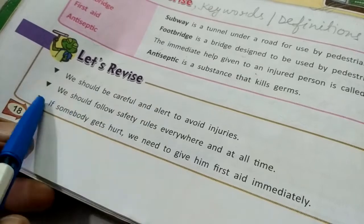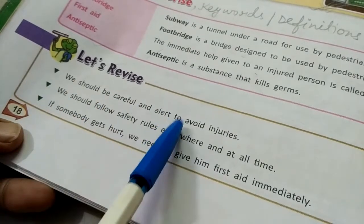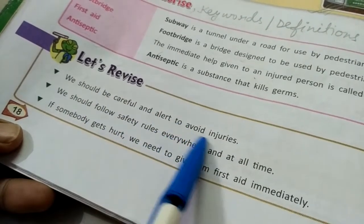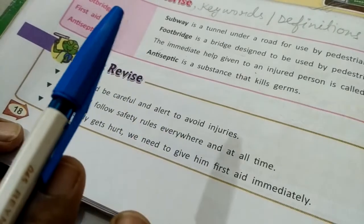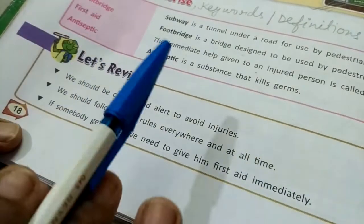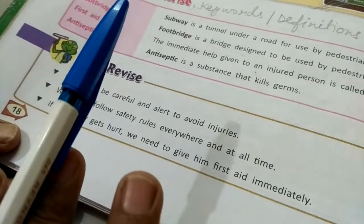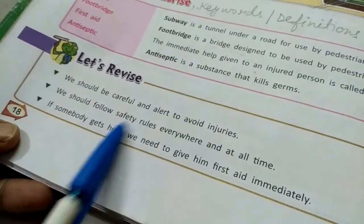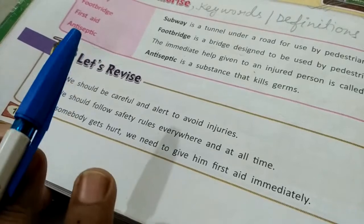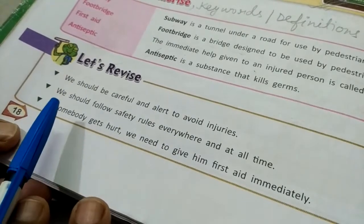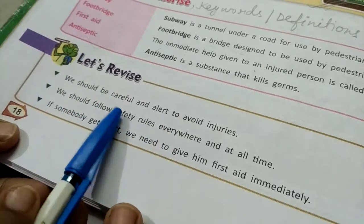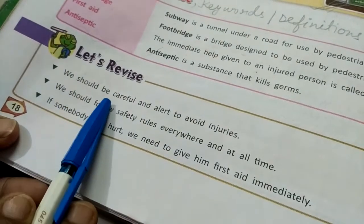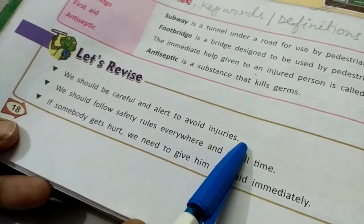Now let's see what is given in the Let's Revise section. We should be careful and alert to avoid injuries. Obviously, this chapter is all about safety and first aid — how we can keep ourselves safe when we are at home, in school, or on the road, and what are the simple first aid tips we should know while treating an injured person who has got hurt or has a cut.